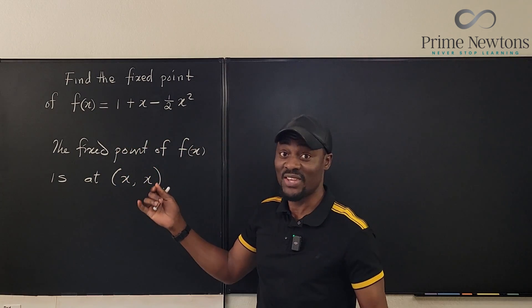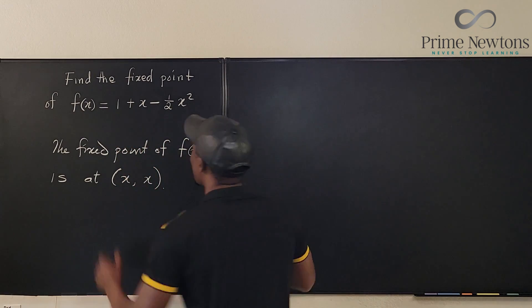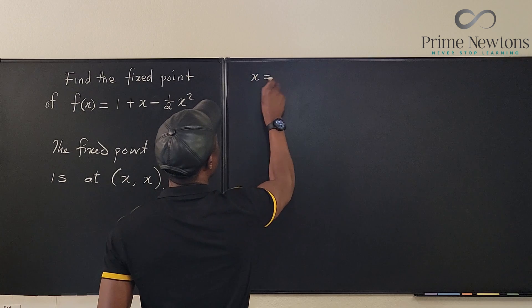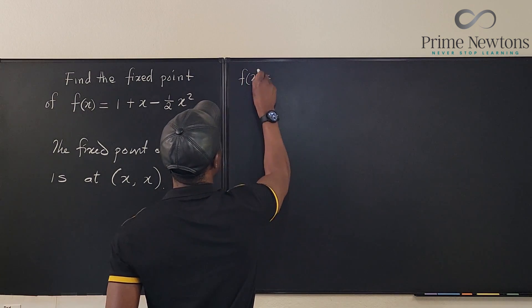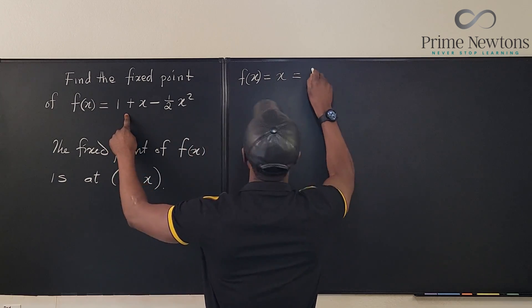Let's do it. So what we have is x will be equal to... let's write it as f(x) will be equal to x. And we've defined f(x) to be 1 plus x minus one-half of x squared.